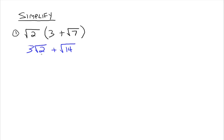Is 3 times the square root of 2 simplified? Yes. Is the square root of 14 simplified? Yes. So this is as far as we can go: 3 times the square root of 2 plus the square root of 14. We can use the distributive property — all those properties we had before for multiplying things out still apply here. We're just using radicals.